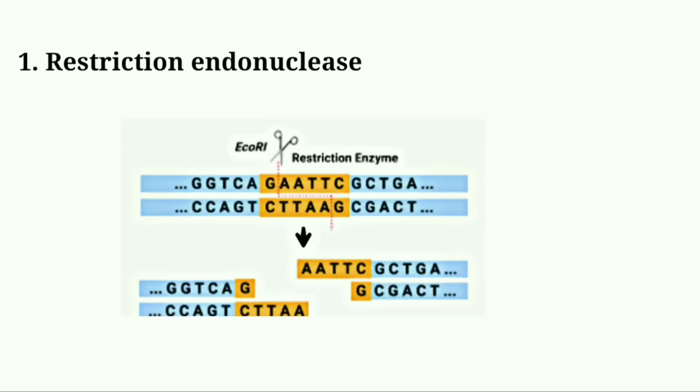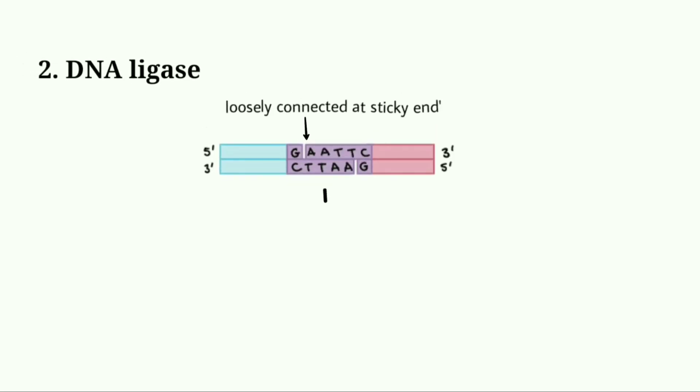Enzyme restriction endonuclease are used to cut DNA at a specific point. Enzyme DNA ligase is used to join two different single DNA strands.